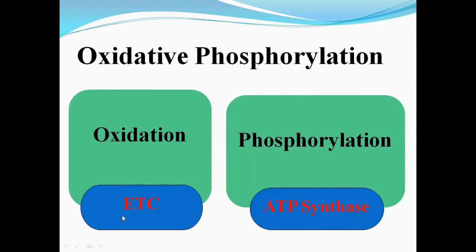In the electron transport chain, the end product is the water molecule. There is a chain for the transfer of electrons — electrons move downward and the final acceptor is oxygen. The oxygen accepts the electrons and the end product of the electron transport chain is the water molecule, while the end product of ATP synthase is the synthesis of ATP from ADP.